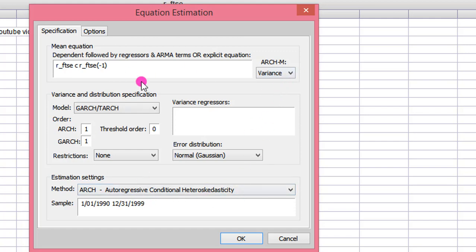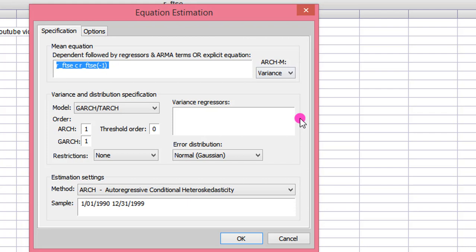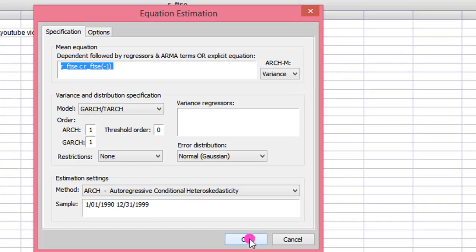So we change this to variance. We go to Options. For optimization method, I've been using E-views legacy. So I change this to E-views legacy. I don't change any other thing. I go back to Specification. Everything looks fine here. My sample size is okay. It's the usual sample size. I click OK.